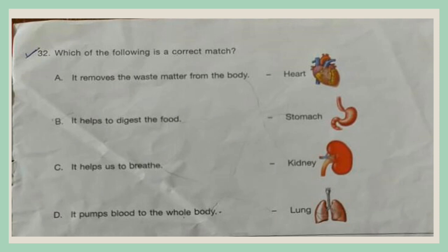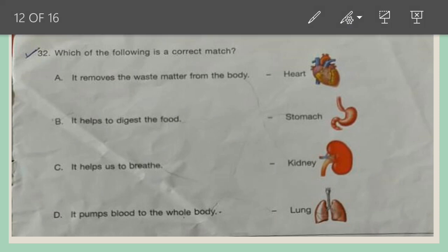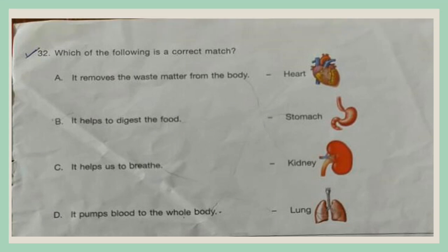Question 32. Which of the following is the correct match? A. It removes waste matter from the body — Heart. B. It helps to digest the food — Stomach. C. It helps us to breathe — Kidney. D. It pumps blood to the whole body — Lungs.